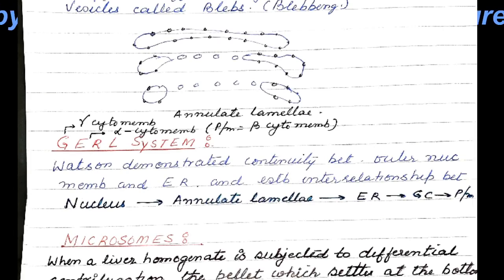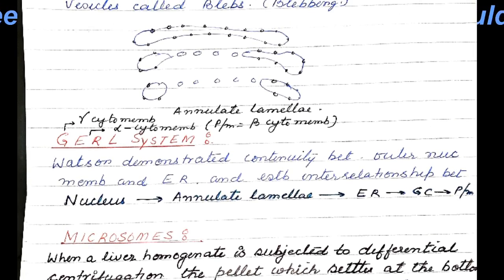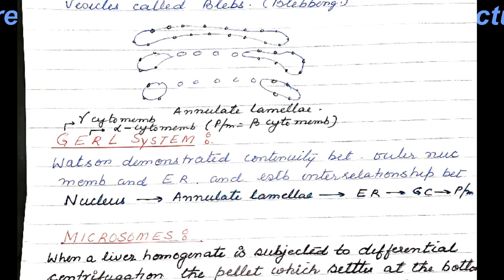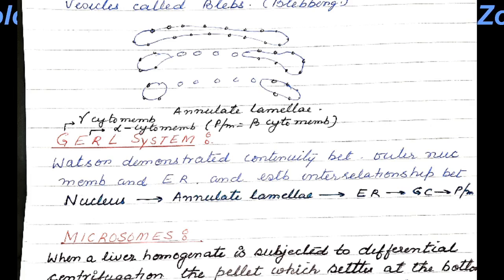Today we are going to study the GIRL system. G stands for gamma cytomembranes, E stands for alpha cytomembranes, L stands for lysosome, and the plasma membrane is considered as beta cytomembranes.